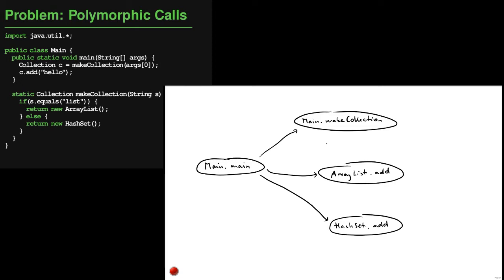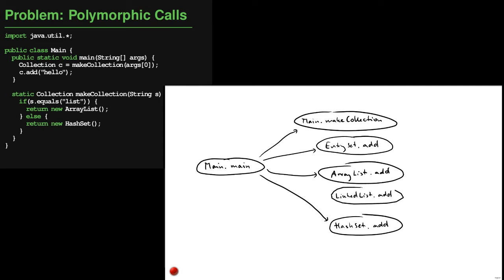For example, it will see that there is a class called EntrySet, which is an implementation of Collection and provides an add method, and therefore it will add an edge to that method. It will also see that there is a LinkedList class which also offers an add method, and because all we know is the statically declared type of variable c, it will add an edge to that add method as well. Because there are many more subtypes and subclasses of Collection, there will be many more such edges. Note also that the add methods are not just those in java.util, but potentially also add methods in custom classes if those classes implement the Collection interface.